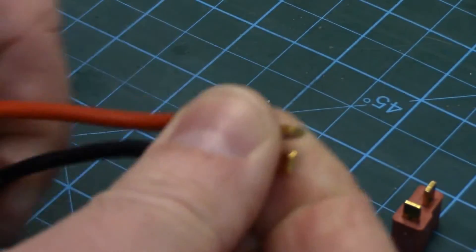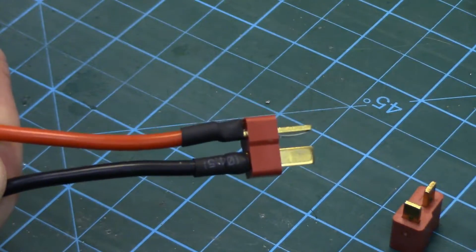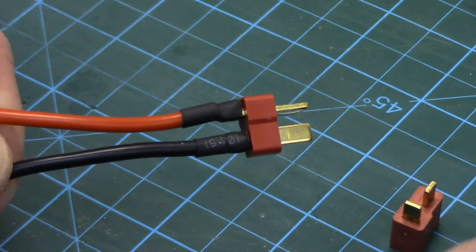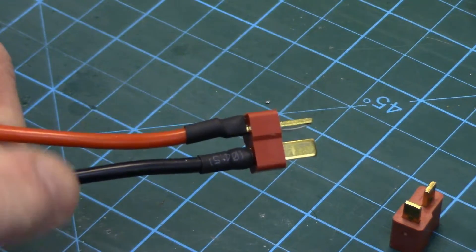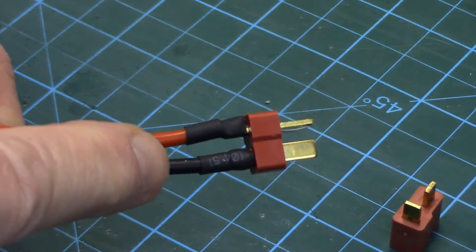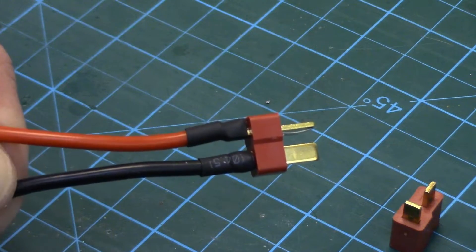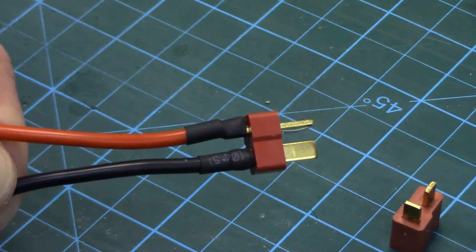Just unplug that now. So hope that helped you understand how to solder up Deans, pretty simple. Two tips though, make sure you get your ends tinned properly before you even start, and that way you'll ensure that you're not applying heat too long.